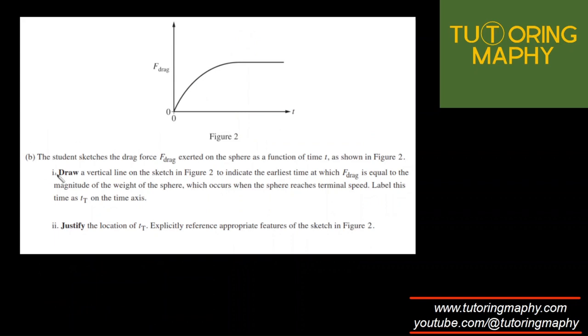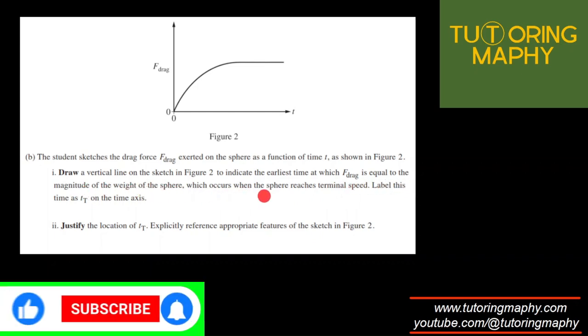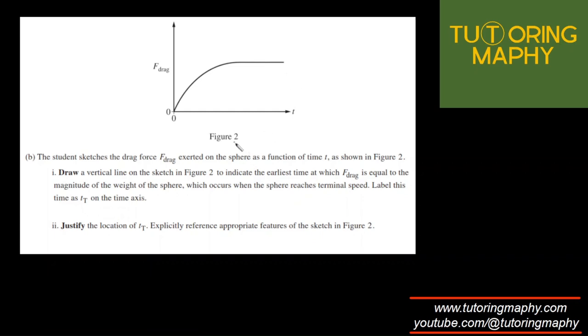The next one talks about a student sketches a drag force, the drag force exerted as a function of time. Draw a vertical line on this sketch to indicate the earliest time when the drag force becomes equal to the weight, which occurs when the sphere reaches the terminal speed. Label this time as t_t on the time axis. So obviously, it makes sense that when they become equal, they have already mentioned that which occurs when the sphere reaches the terminal speed. The terminal speed is when the speed becomes constant or the acceleration becomes zero.